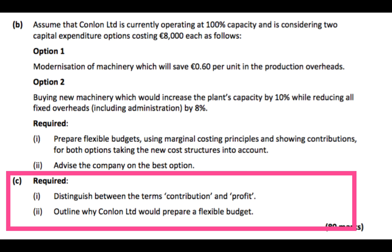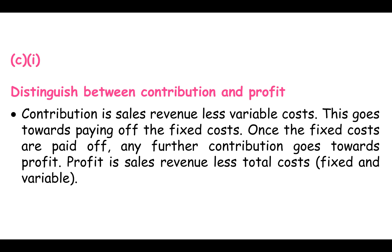Part C, part one: distinguish between the terms contribution and profit. Contribution is sales revenue less variable costs. This goes towards paying off the fixed costs. Once the fixed costs are paid off, any further contribution goes towards profit. Profit is sales revenue less total costs — both fixed and variable.